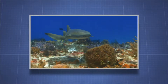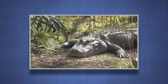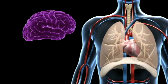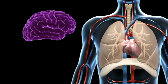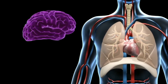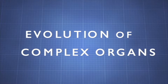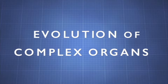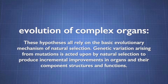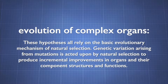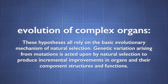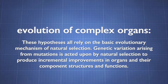Darwin's theory of evolution by natural selection is a simple mechanism to explain how complex creatures evolved from simpler ancestors. A challenge for scientists is to explain the evolution of specific complex organs like the brain, lungs, and heart. At the beginning of the 20th century, biologists developed various models to account for the evolution of complex organs. These hypotheses all rely on the basic evolutionary mechanism of natural selection. Genetic variation arising from mutations is acted upon by natural selection to produce incremental improvements in organs and their component structures and functions.